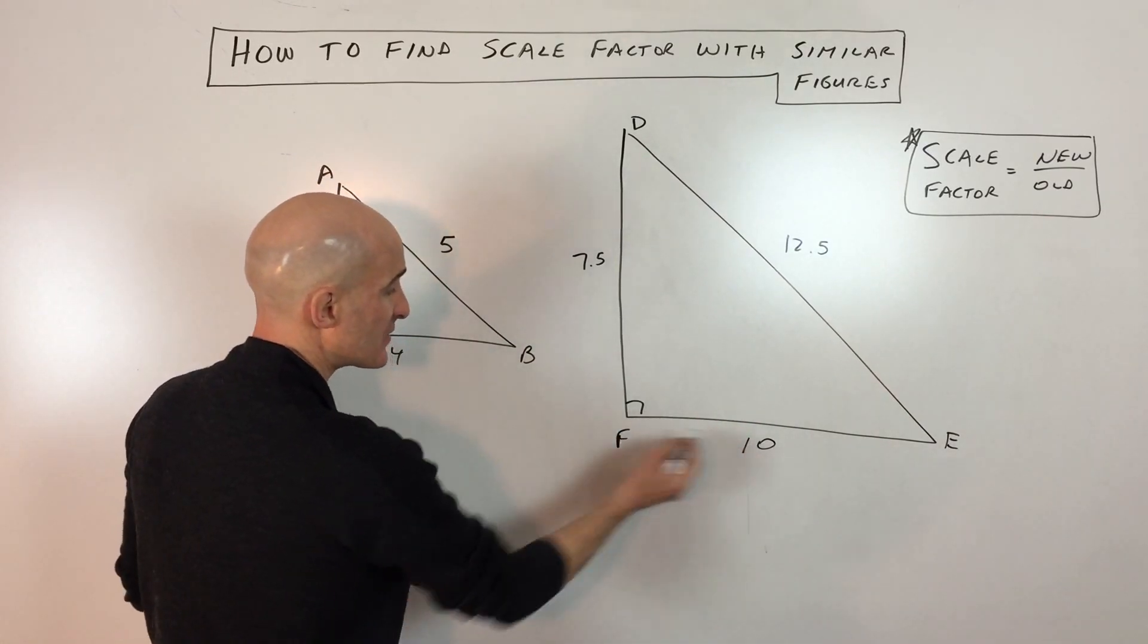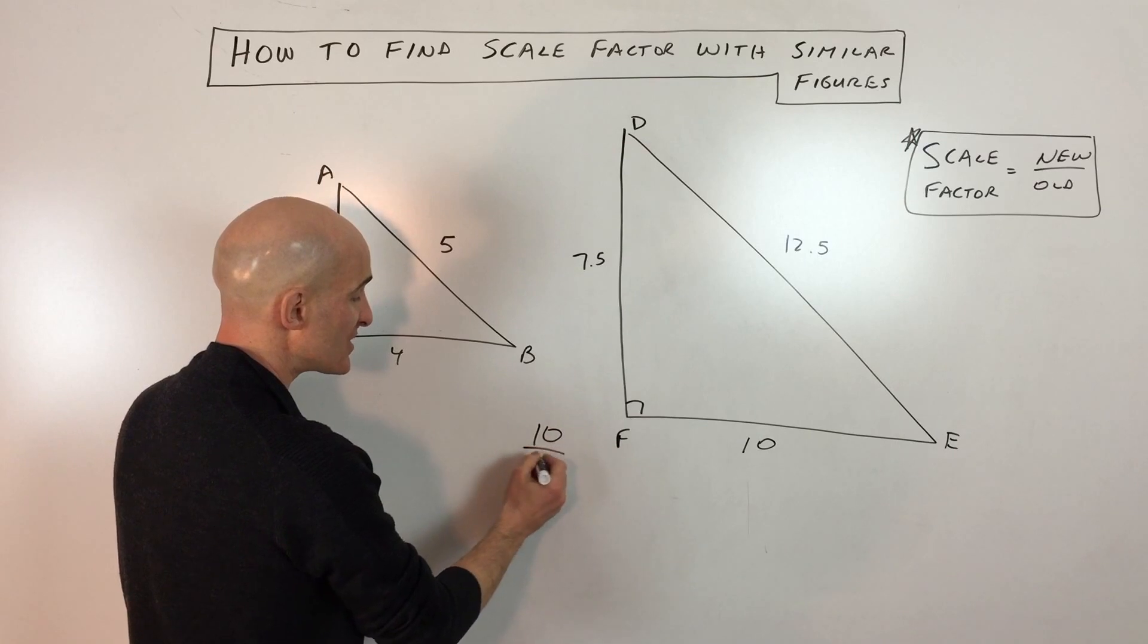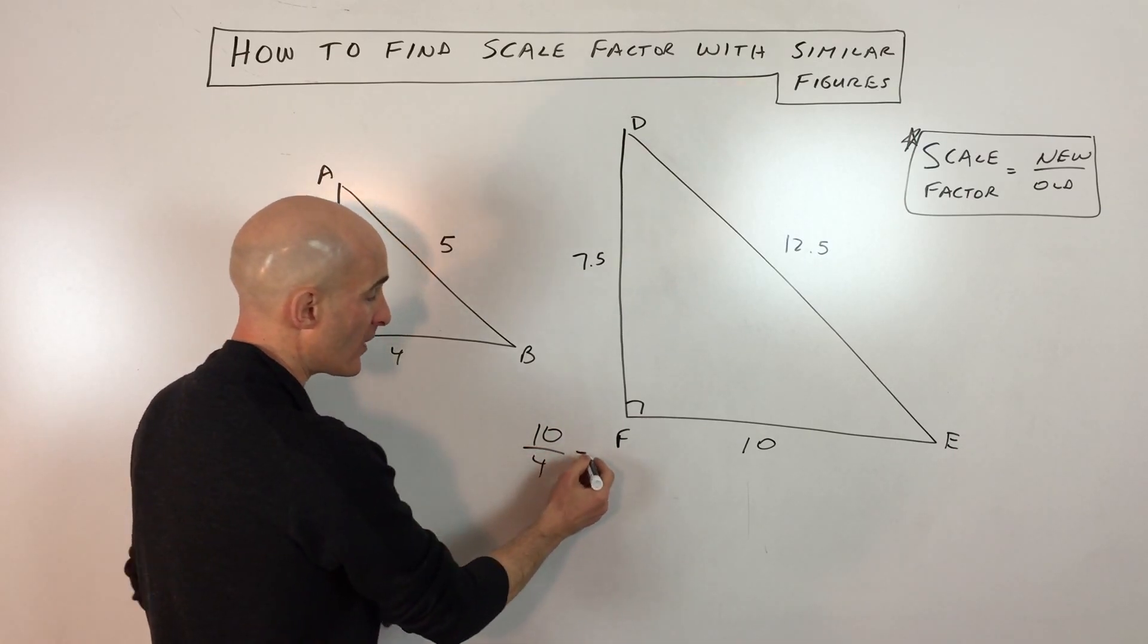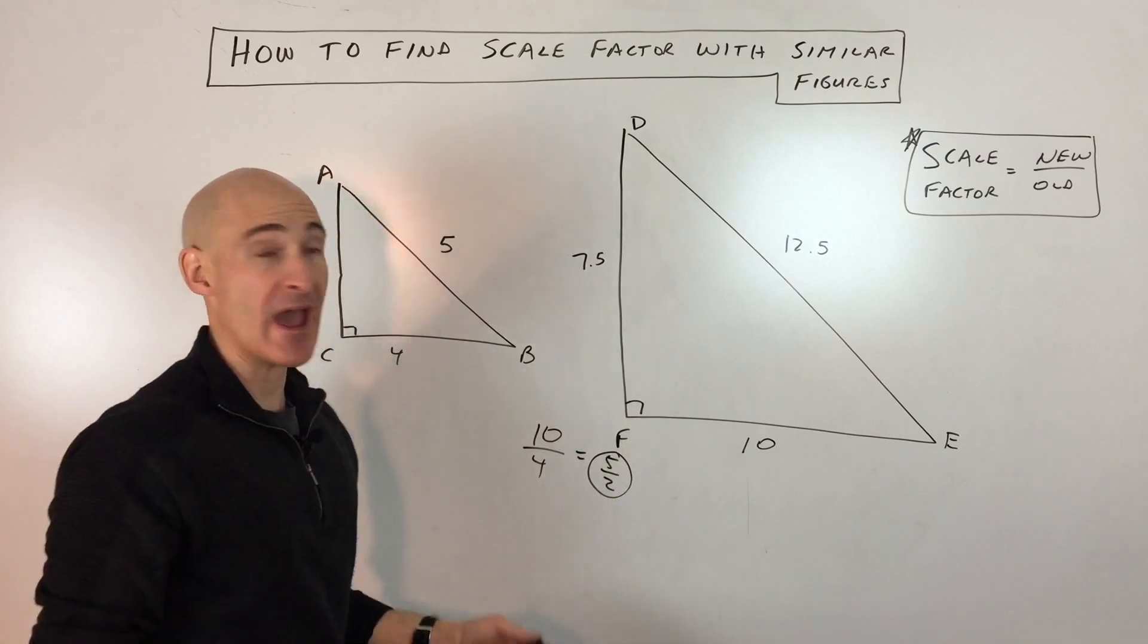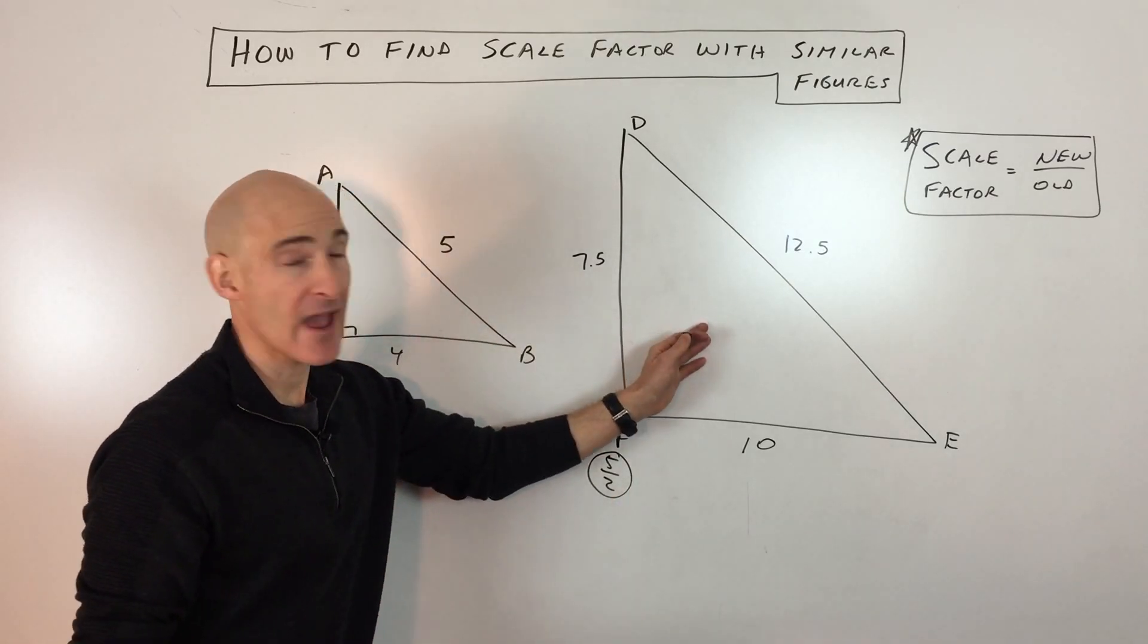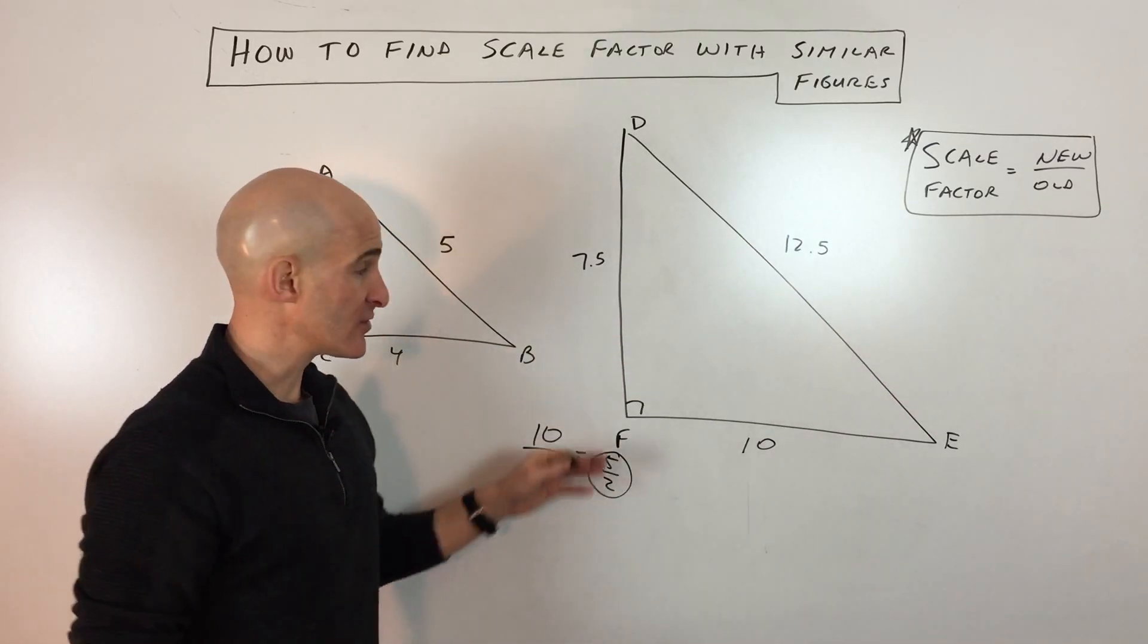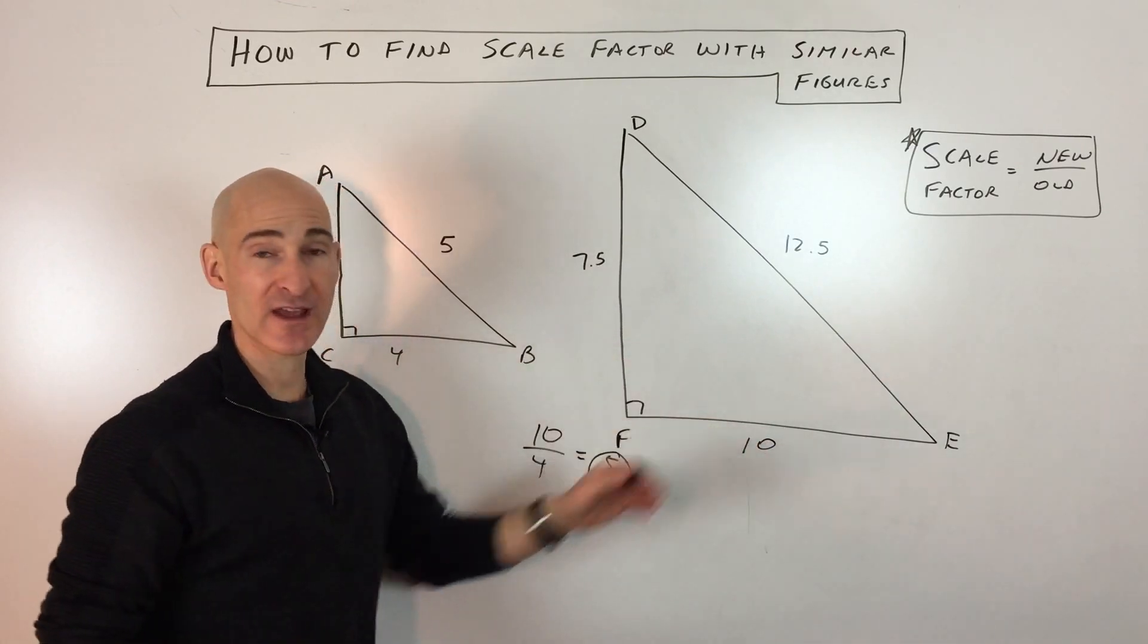So the easiest way to do this would just be to take the new length, which is 10, divided by the old length, which is 4. And you can see that's giving us a scale factor of 5 divided by 2, which is 2.5. So this is going to be 2.5 times the scale, so the sides are 2.5 times longer.